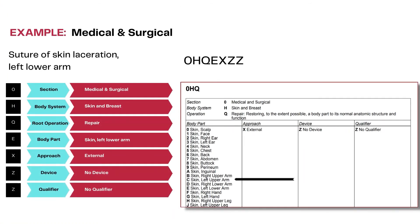Here is an example of how a simple laceration repair of the skin is coded. PCS codes are built around the objective of the procedure, which is the root operation — in this case, repair. The body part is left lower arm skin. If this same repair involves the subcutaneous tissue, then the body system would change to subcutaneous tissue and fascia instead of skin and breast.